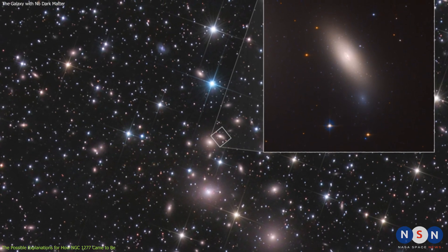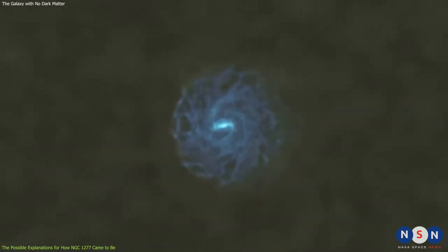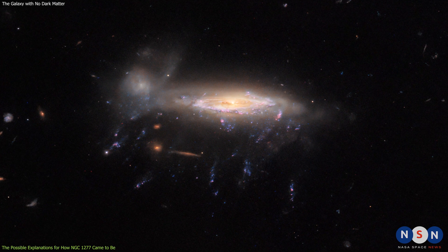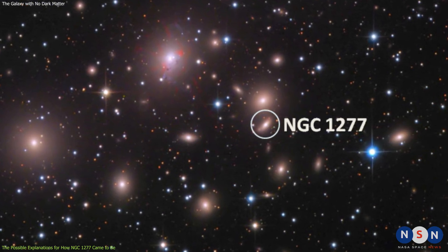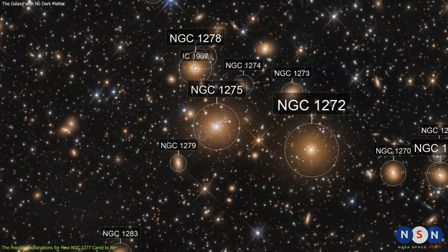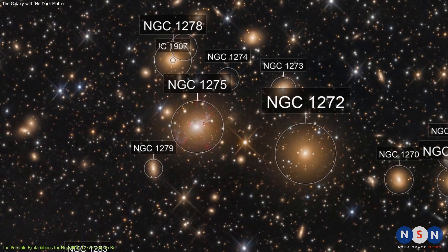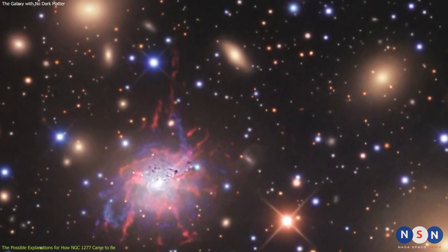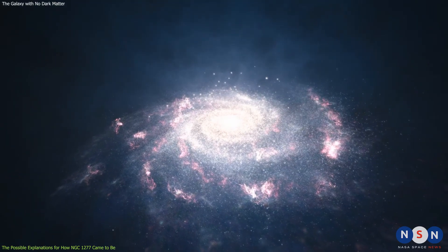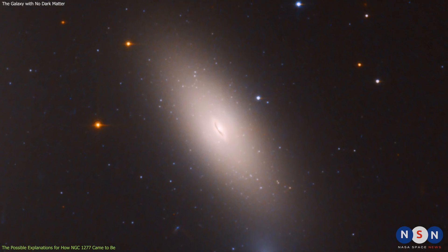However, this scenario faces some challenges when applied to NGC 1277. For one thing, this galaxy is not moving very fast through the cluster, only about 1,000 kilometers per second. This is not enough to cause significant ram pressure stripping. For another thing, this galaxy is very close to the center of the cluster, only about 5,000 light-years away from the giant elliptical galaxy NGC 1275, which dominates the cluster's mass. This means that NGC 1277 should experience strong tidal forces from NGC 1275, which should distort its shape and disrupt its stars. However, NGC 1277 appears to be very round and undisturbed.